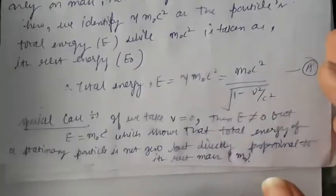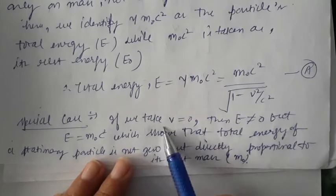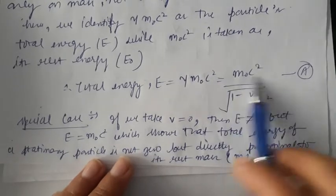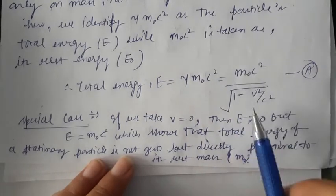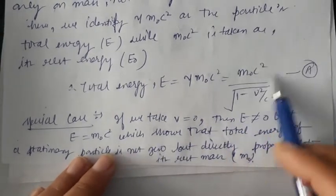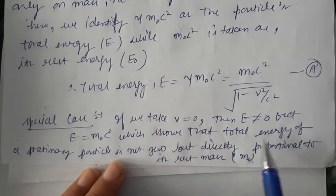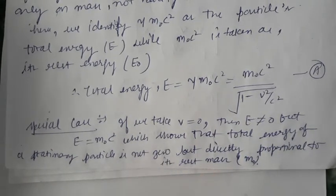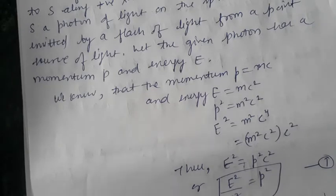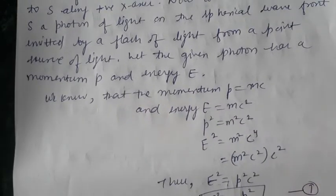As a special case, if we take v = 0, then E = m₀c². This shows that the total energy of a stationary particle is not zero, but is directly proportional to its rest mass m₀. So even when a body is at rest, its energy is not zero — it equals m₀c². Thank you, students.